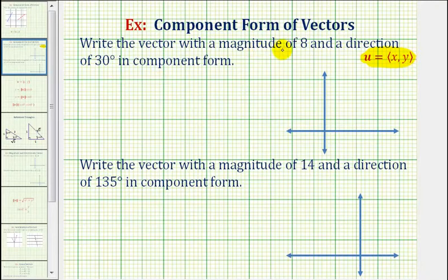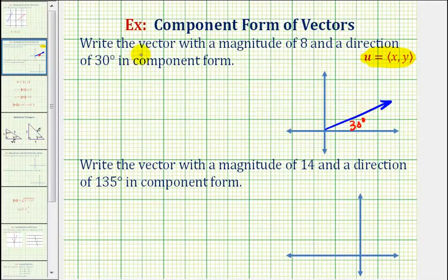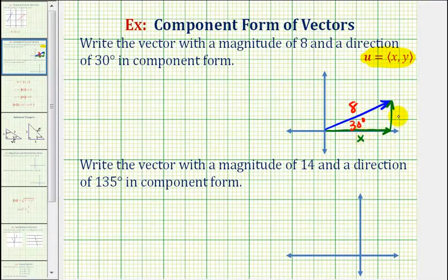So let's go ahead and sketch this vector on the coordinate plane with the initial point at the origin. The angle between the positive x-axis and the vector would be 30 degrees, and because the magnitude is eight, this vector would have a length of eight units. So this would be the horizontal component of the vector and this would be the vertical component of the vector. We'll call this x and we'll call this y.